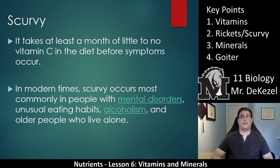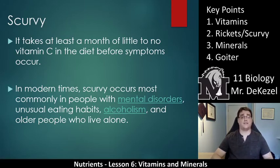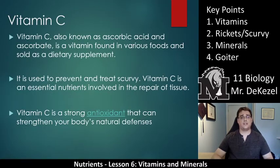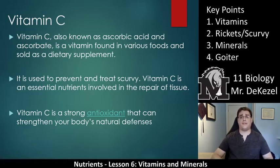So vitamins are very important and very specific things required to do very important jobs in your body. Vitamin C is also known as ascorbic acid. It is found in various foods and also sold as a dietary supplement; it is used to prevent and treat scurvy. Vitamin C is an essential nutrient involved in the repair of tissue — you can't make it, you need to ingest it. It is a strong antioxidant and can strengthen your body's natural defenses, which is why in Thailand hospitals they give you an IV with vitamin C in it.